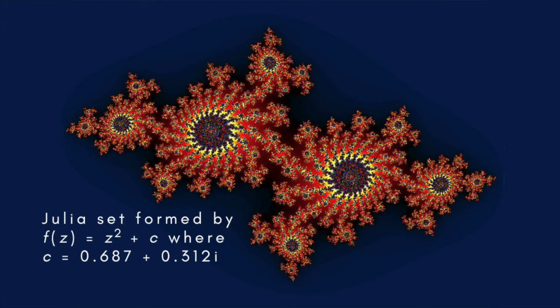Julia sets are named after the French mathematician Gaston Julia, who, along with his compatriot Pierre Fatou, did pioneering work on the subject of complex dynamics in the early 1900s. If you iterate any point on the Julia set, the resulting point will stay on the Julia set, but may move around it without settling into a repeating pattern.